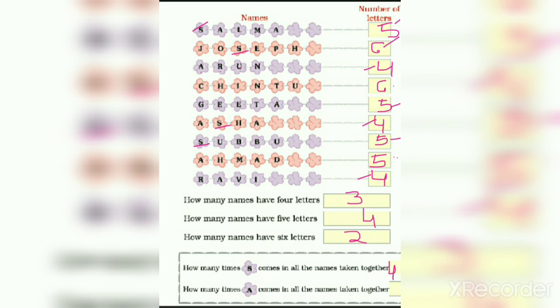How many times A comes in all the names taken together? Let us search letter A. 1, 2, 3, 4, 5, 6, 7, 8, 9. There are 9.